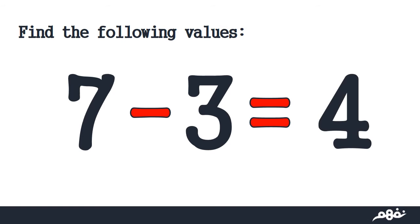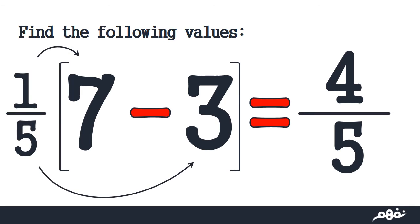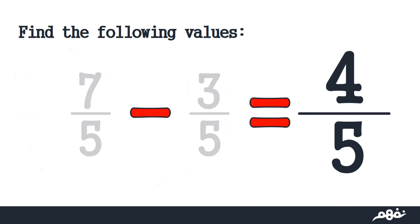If we subtract 3 from 7, sure we got 4. But if we want to express this 4 as 4 over 5, you multiply this whole term by one-fifth, 1 over 5, and then distribute it, like saying 7 over 5 minus 3 over 5 equals 4 over 5. So when we have the same denominator, we subtract the numerators easily.